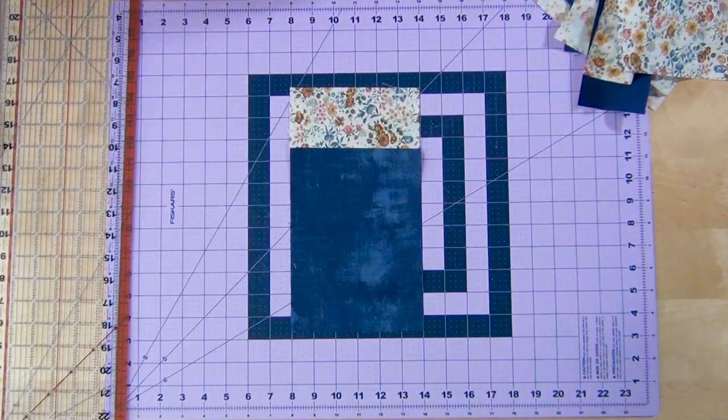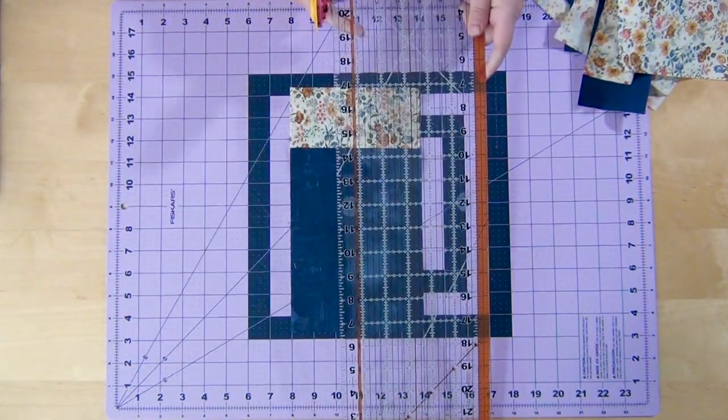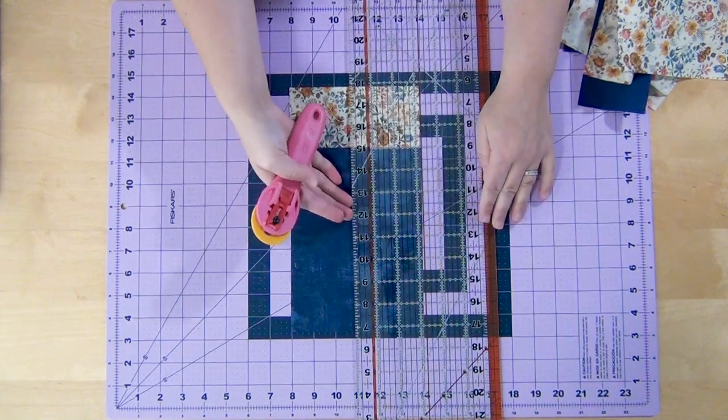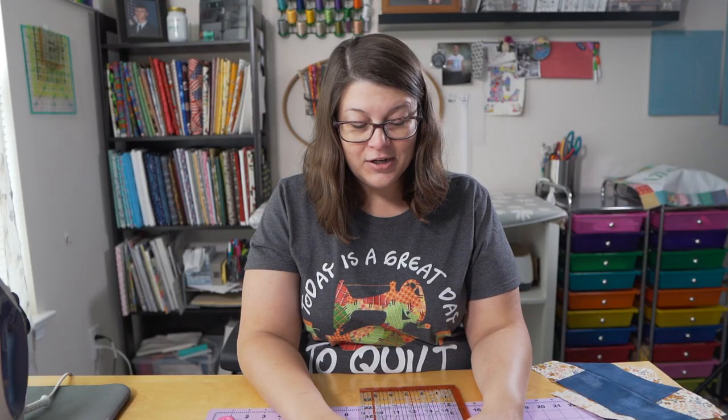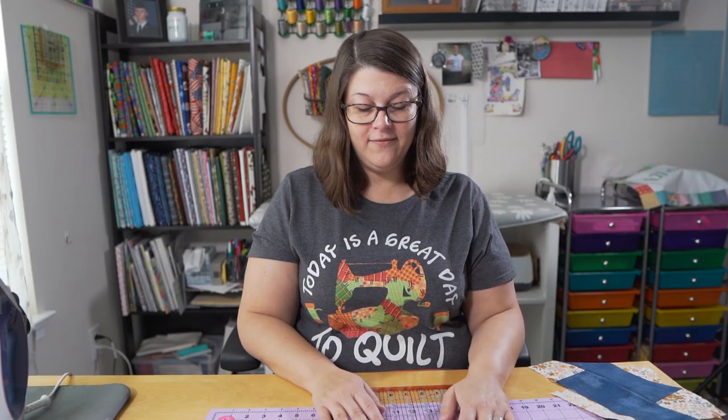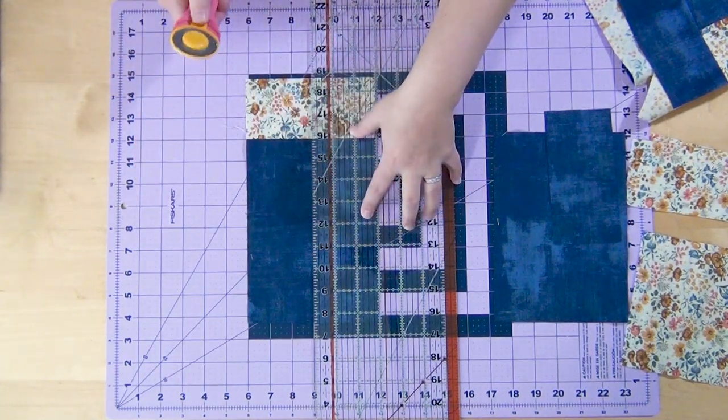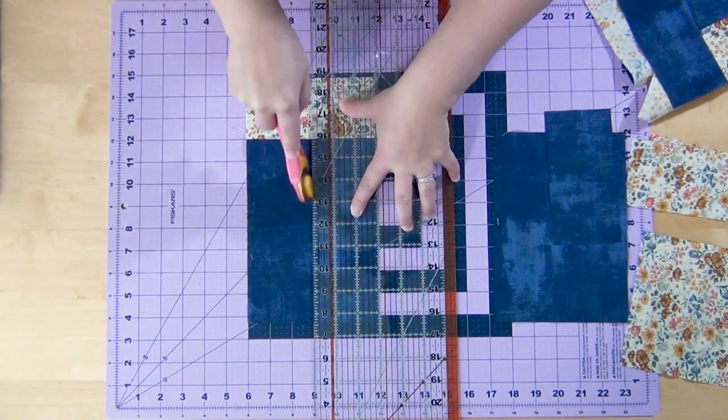So after you sew those together, you're going to lay them down on your mat and you're going to cut it in half and that's 3 inches because these are 6 inches wide. So you're going to cut that in half. So you'll lay this at the 3 inch mark and you'll cut it in half.